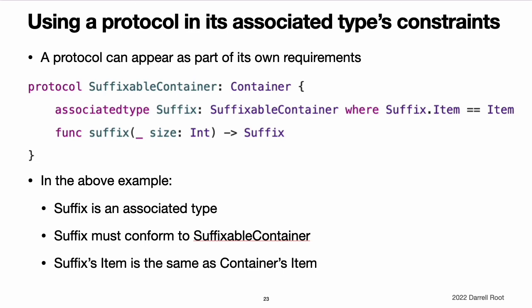Using a protocol in its associated type's constraints. A protocol can appear as part of its own requirements. For example, here is a protocol that refines the container protocol, adding the requirement of a suffix method. The suffix method returns a given number of elements from the end of the container, storing them in an instance of the suffix type. In this protocol, suffix is an associated type, like the item type in the container example previously. Suffix has two constraints: it must conform to the suffixableContainer protocol — the protocol currently being defined — and its item type must be the same type as the container's item type. The constraint on item is a generic where clause, which is discussed in associated types with the generic where clause below.